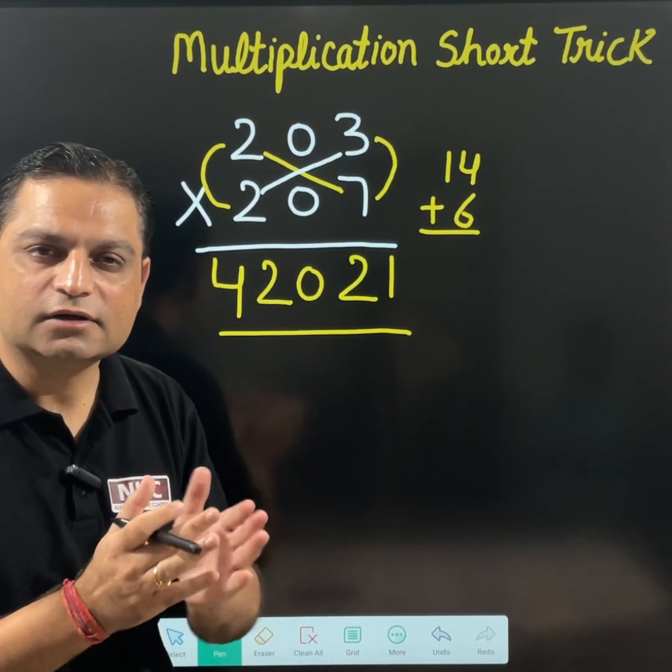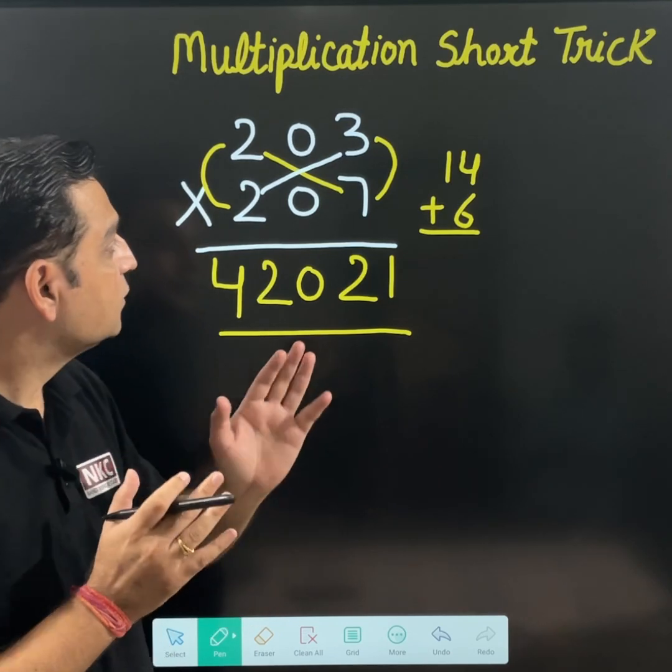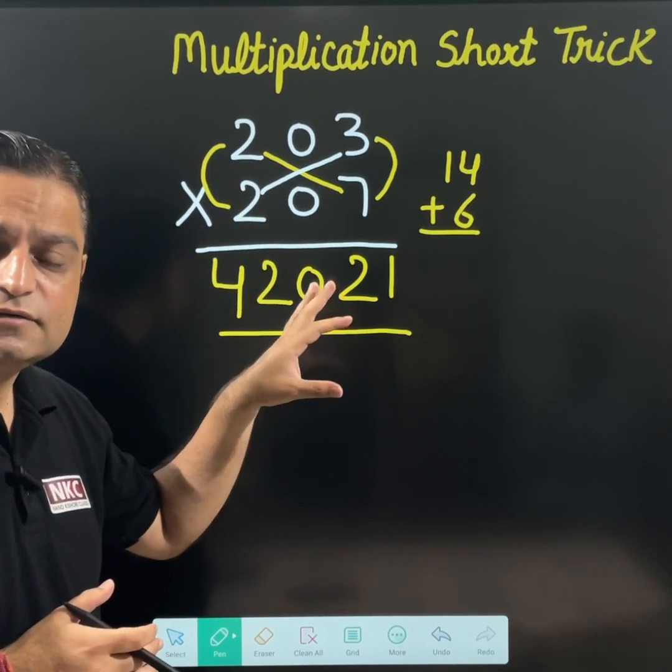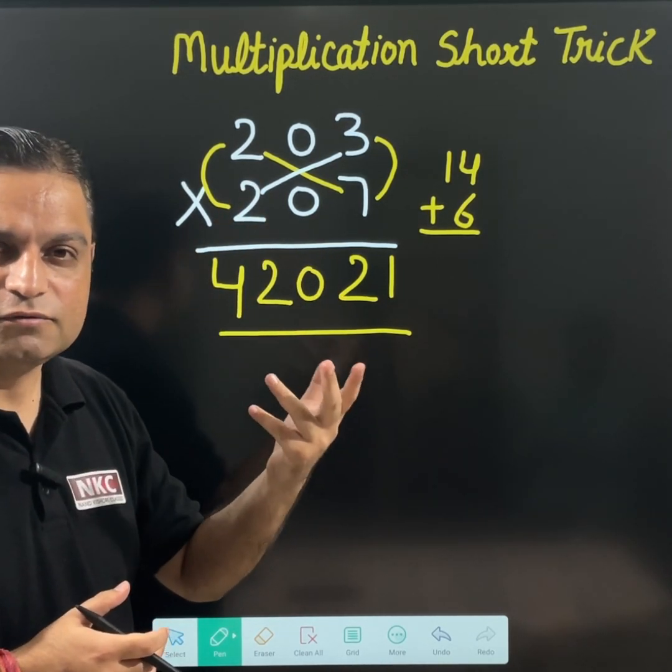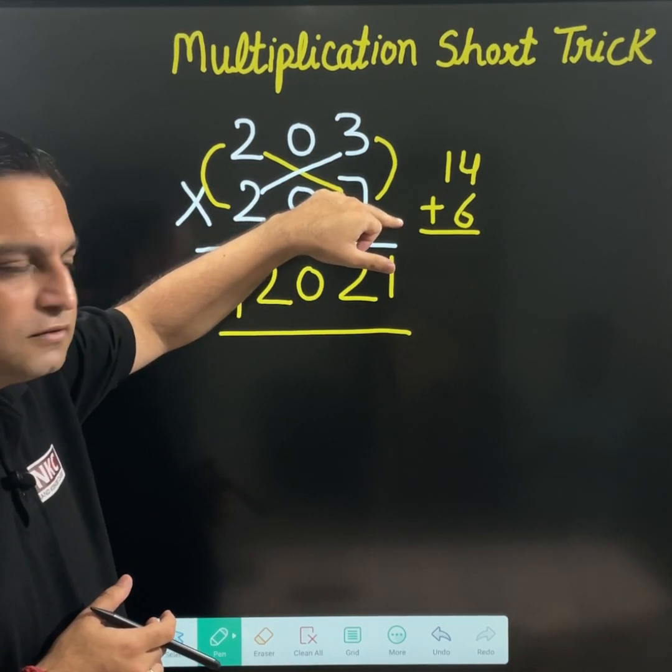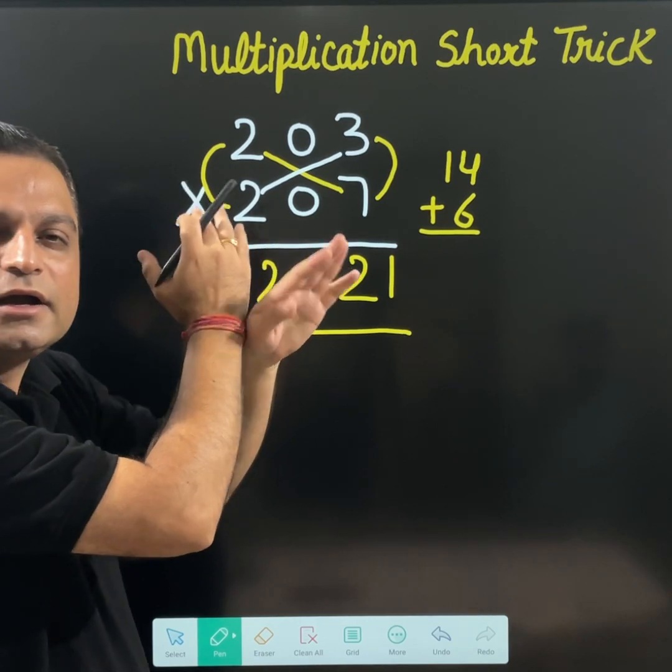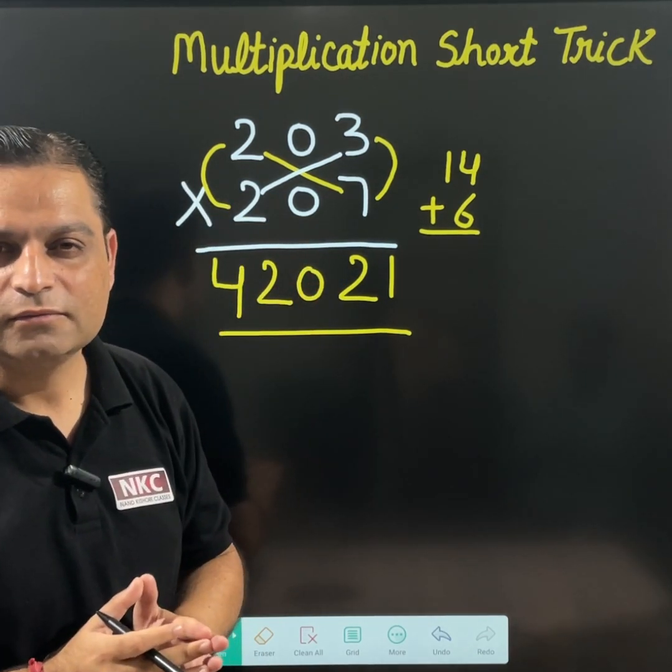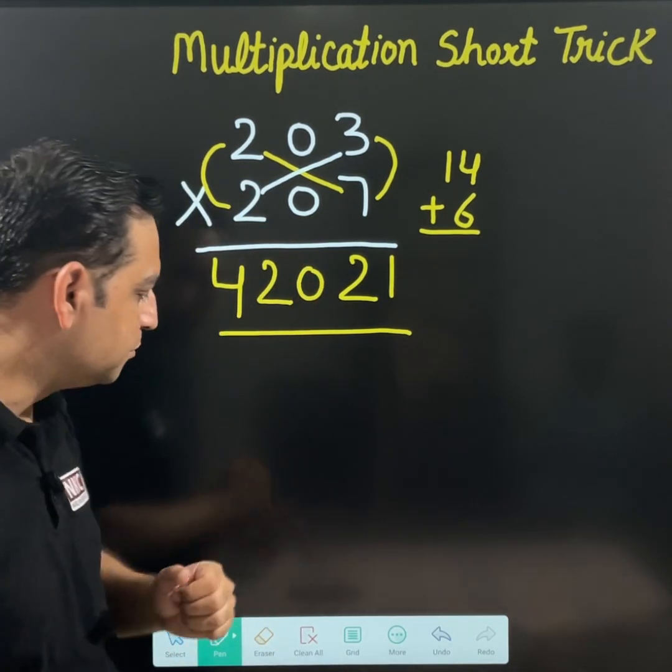I hope you are clear with the concept. This process is very easy. It is just multiplication of the last two numbers, first two numbers, cross multiply, add them and write as the middle value. We are going to take different examples now.